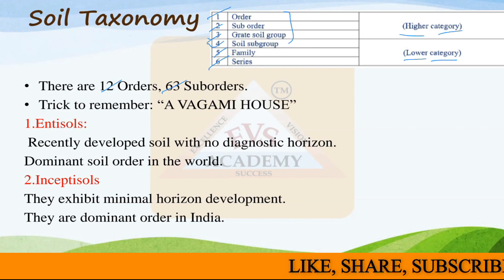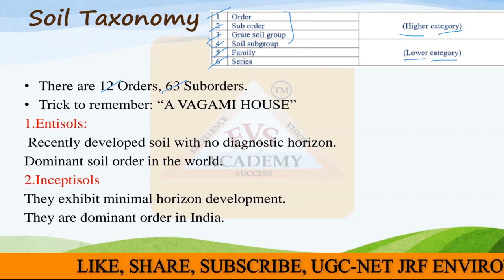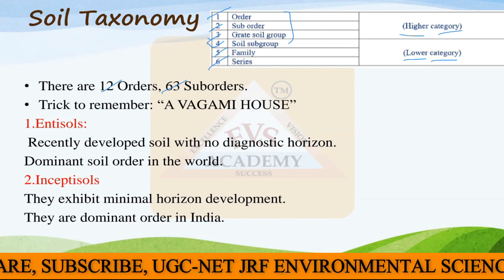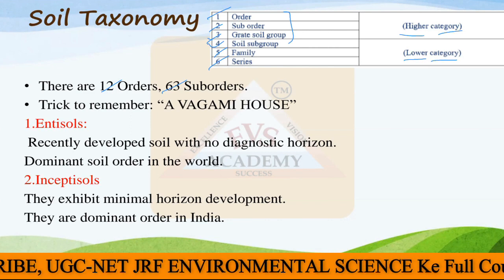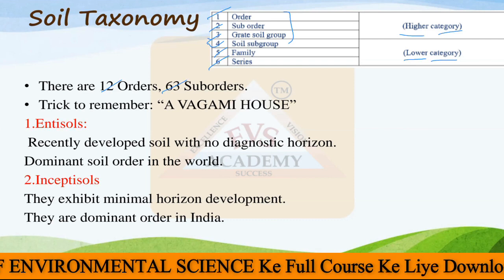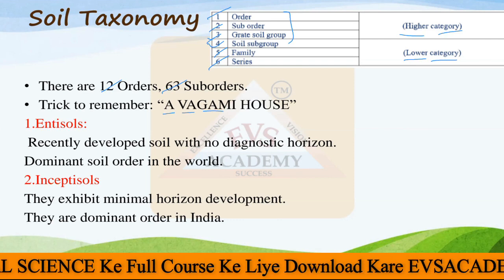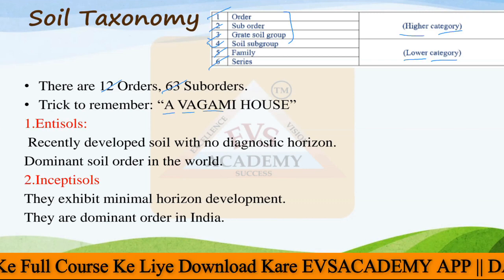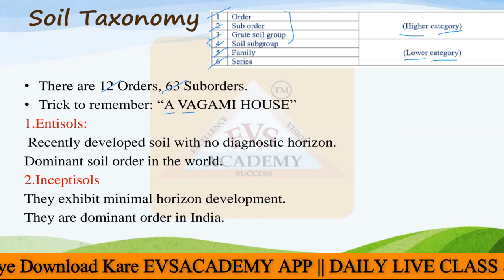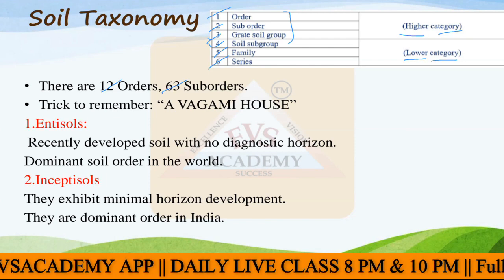The trick to remember all the orders is written here - that is 'Awagami House.' All the different types of soil orders come under these different letters. Every letter of this is denoting some kind of soil. Let's see what the different soil orders are.